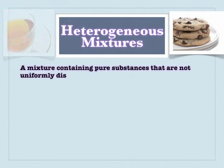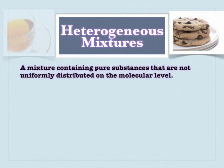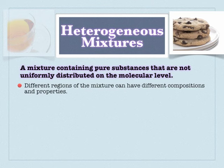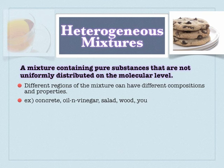Heterogeneous mixtures, on the other hand, are not uniformly distributed — think chocolate chip cookies, raisin bran, salad. Different regions can have different compositions: concrete, oil and vinegar salad dressing, the grain of wood. You are actually a giant heterogeneous mixture — if a zombie were to bite you, each bite would give a different taste experience because you are not uniform throughout.